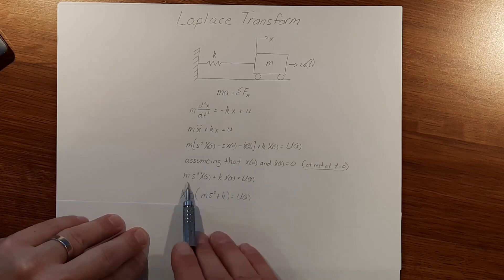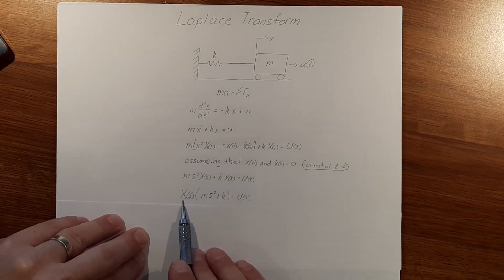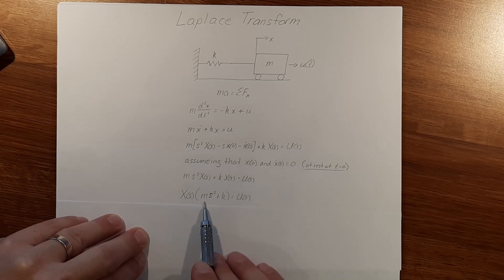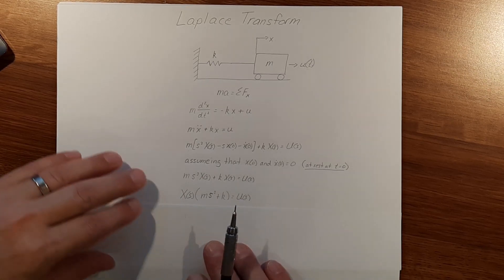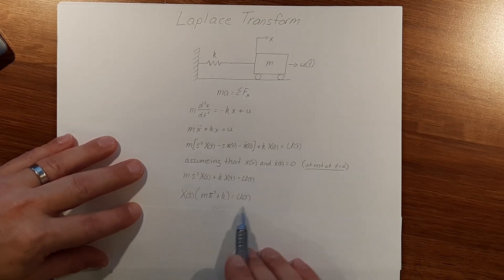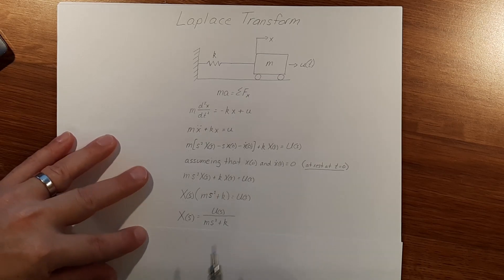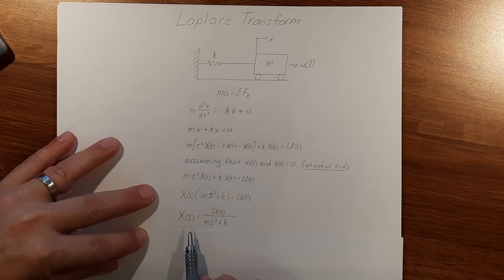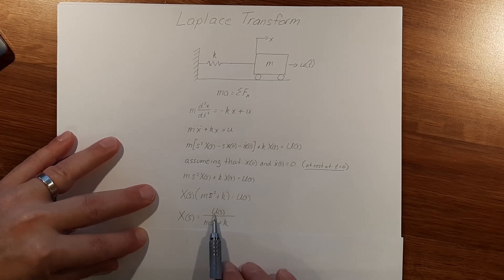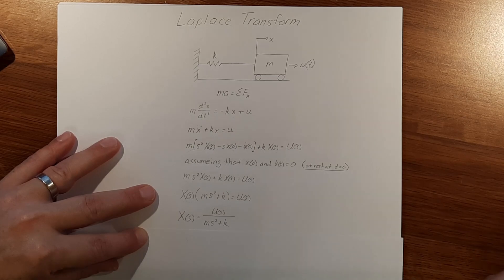If we factor out the X of s here, we can have X of s times m s squared plus k equals big U of s. Then dividing out the m s squared plus k, we get our Laplace transform: big X of s equals big U of s divided by m s squared plus k.